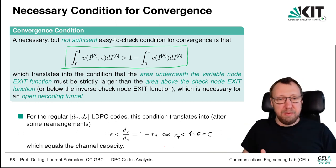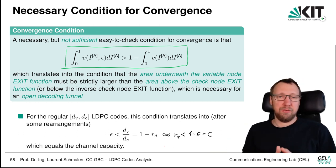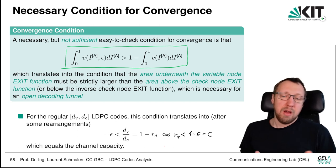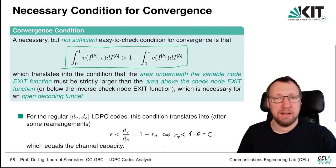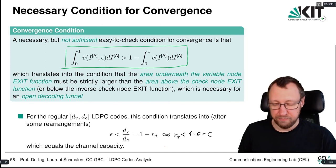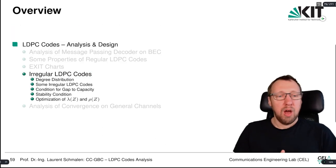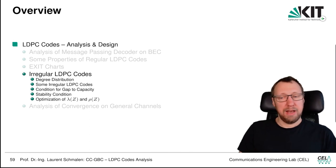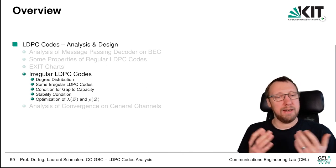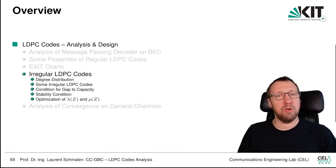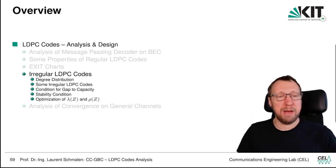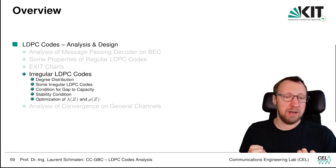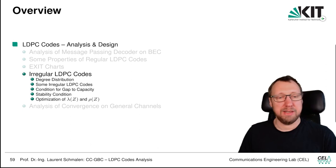This is reassuring because it shows that reaching capacity is not fundamentally prevented — regular codes cannot achieve it, but nothing in the condition prevents it in general. With this, we have reached the end of the EXIT chart chapter. In the next chapter, we will look at irregular LDPC codes, a class of codes that allows us to get closer to capacity.